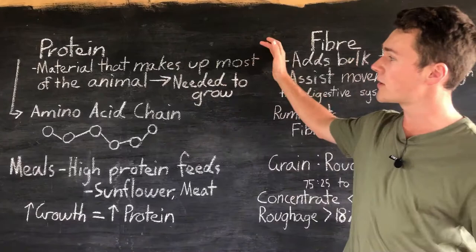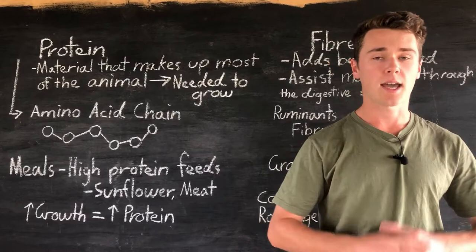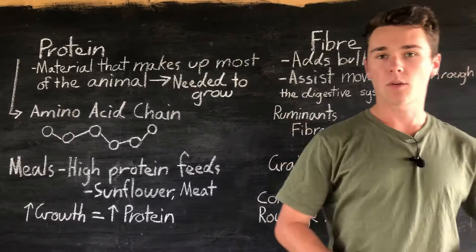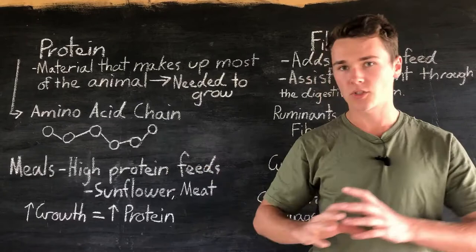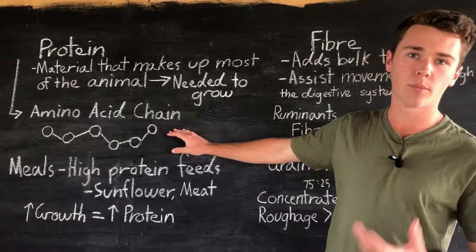The next nutritional requirement is protein. Protein is the material that makes up most of the animal — that includes the muscle, skin, hair, pretty much anything except bones and fat. Proteins are required for the animal to grow. A protein is a chain of amino acids — amino acids are compounds that bond together to form a long chain that bends and twists in a particular way. Essentially, amino acids are the building blocks of proteins, and proteins are the building blocks of animals.